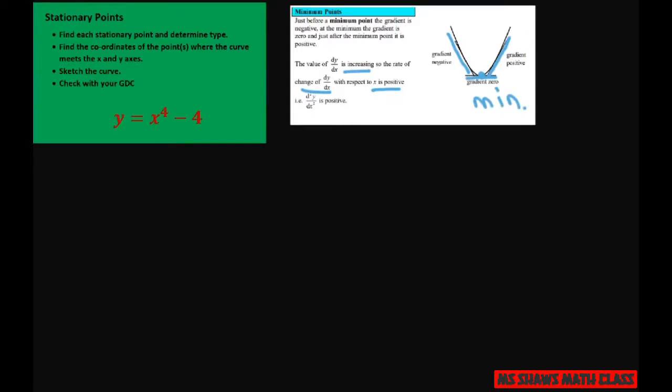Now to sketch it, we also need to find our y-intercepts. So that's when x is zero. When x is zero, it's negative four. So basically our y-intercept is our minimum.